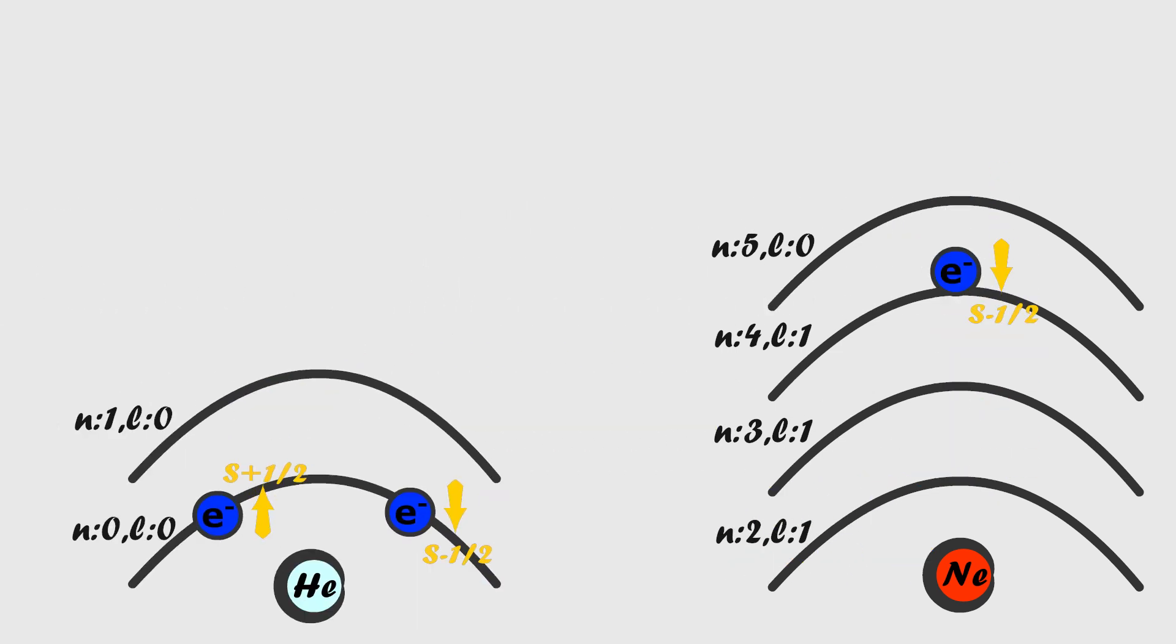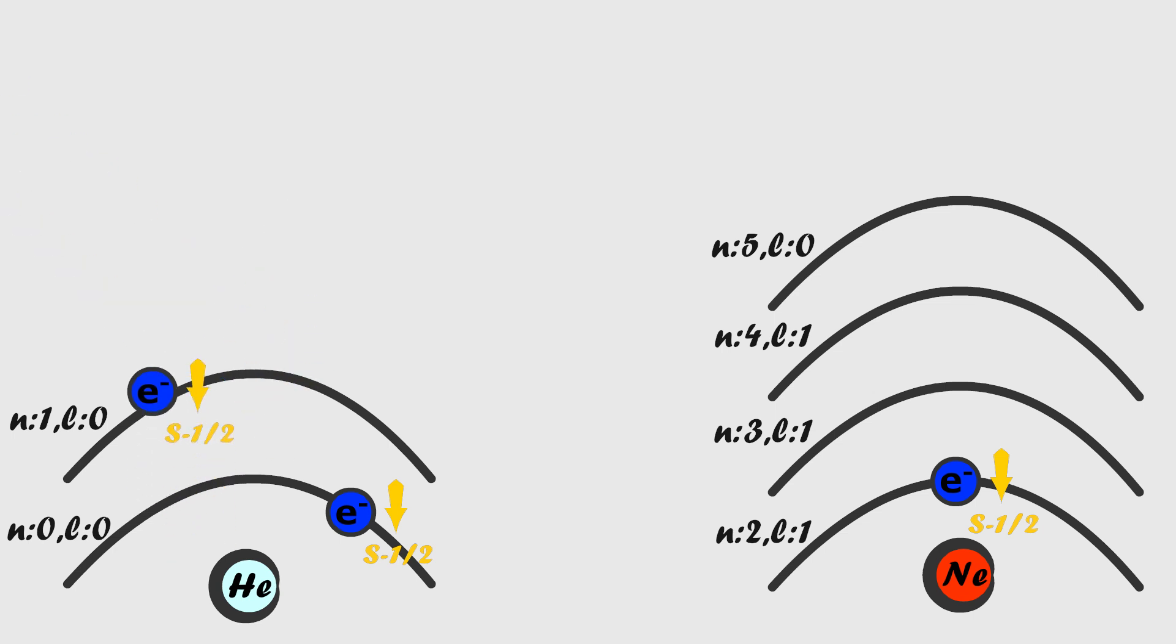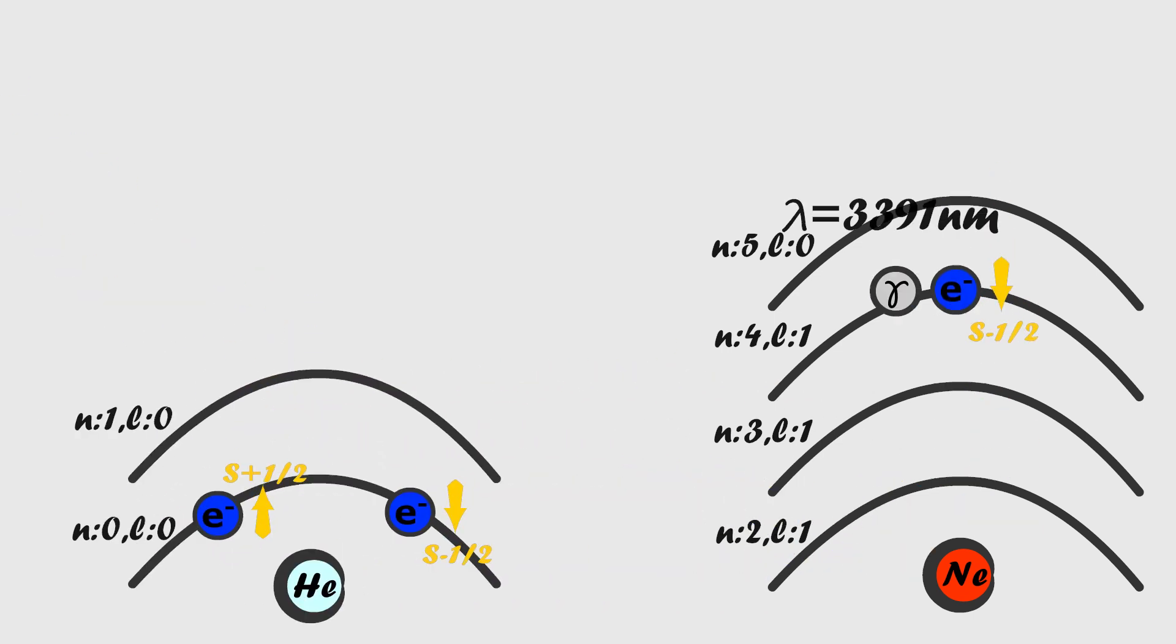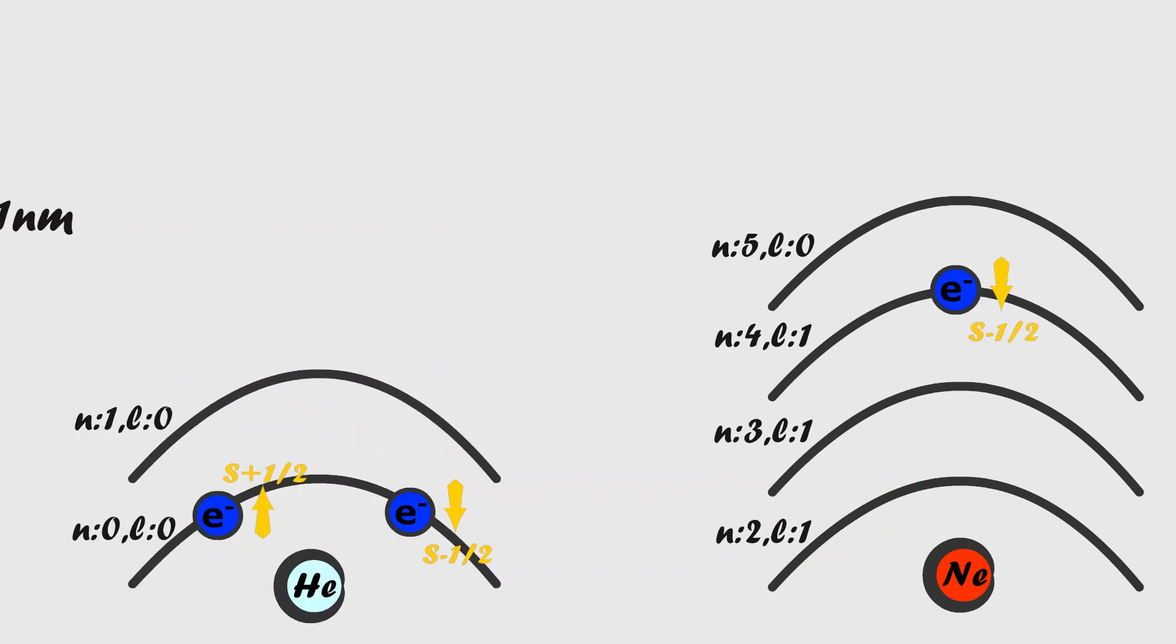By combining the mechanisms that enable these conditions, the helium-neon laser source is created. Finally, let's understand the components of this source that satisfy this working principle.